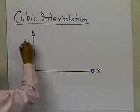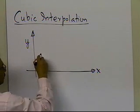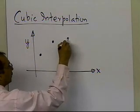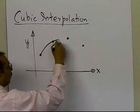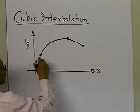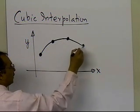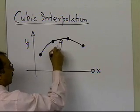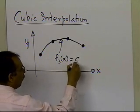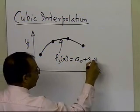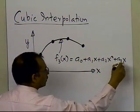But in cubic interpolation, what you're going to do is you're going to choose four data points, and then draw the cubic interpolant through those four points. So through these four data points, you are choosing a cubic interpolant, which will be f3 of x, and the form of that will be a0 plus a1*x plus a2*x² plus a3*x³.